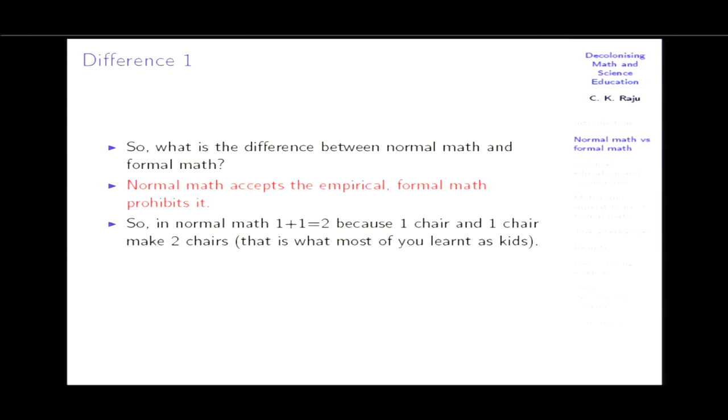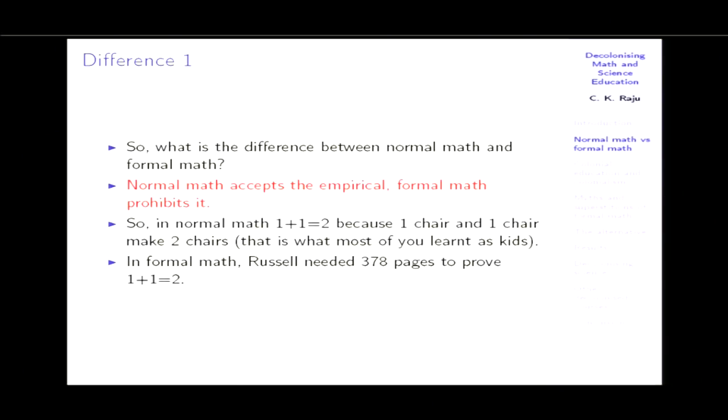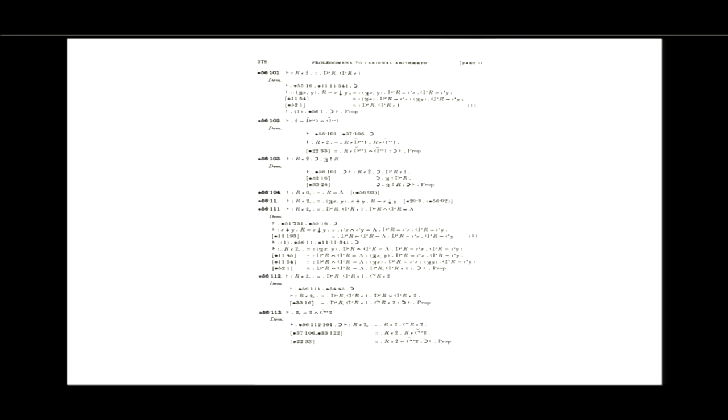In normal math, 1 + 1 = 2 because one bottle and one bottle make two bottles — that's what you learned as kids. But in formal math, Whitehead and Russell needed 378 pages to prove 1 + 1 = 2. Can you understand a single character in it? It's complete gobbledygook. Since science and engineering are about the real world, and they already accept empirical proofs, if you accept empirical proofs in mathematics nothing terrible will happen — science and engineering will continue to work perfectly.